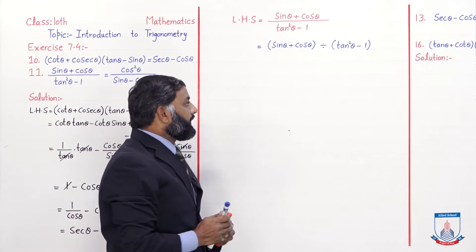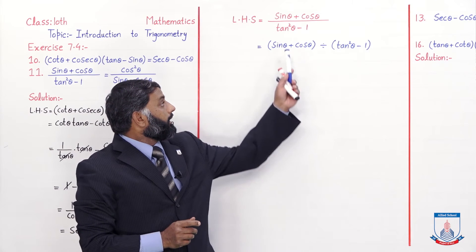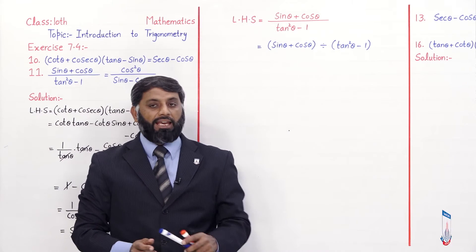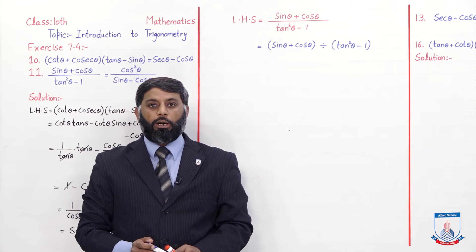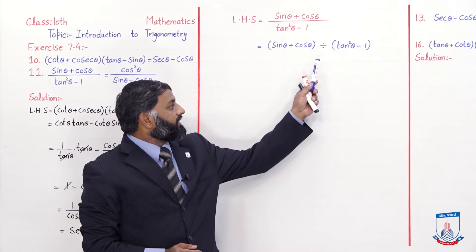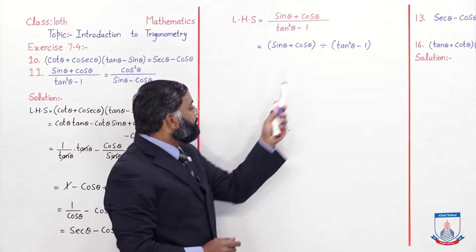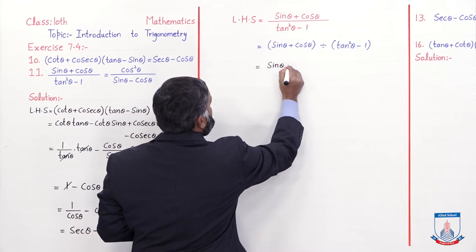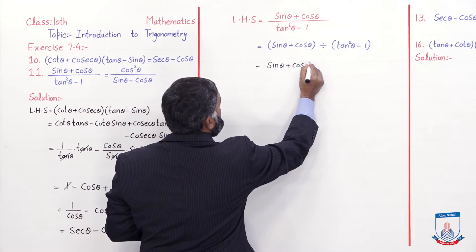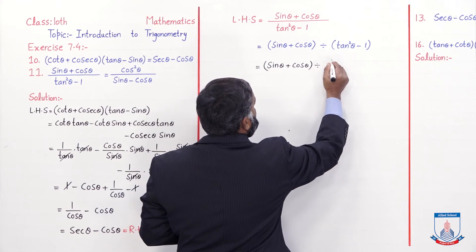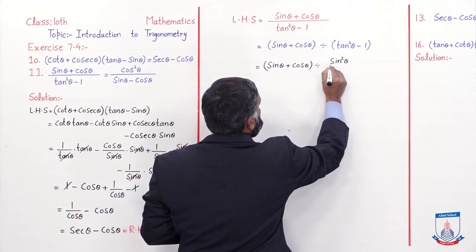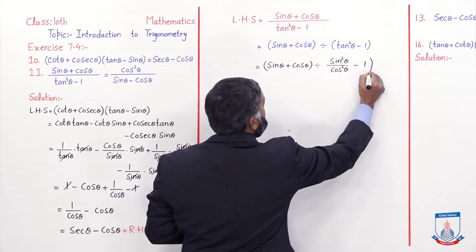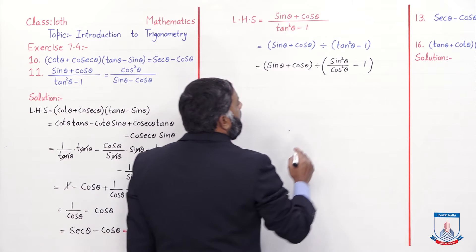We write this with a division sign because in place of tan²θ we can write sin²θ / cos²θ. This will form fractions, so we need to take the LCM. Taking LCM would make a complex fraction in the denominator. To avoid this, I write the fraction using division. So: (sin θ + cos θ) divided by (sin²θ / cos²θ − 1).